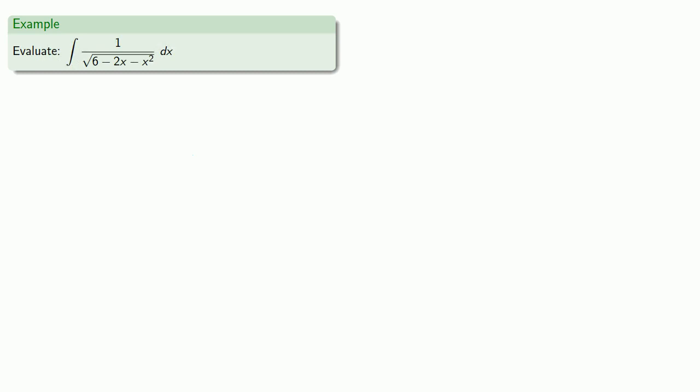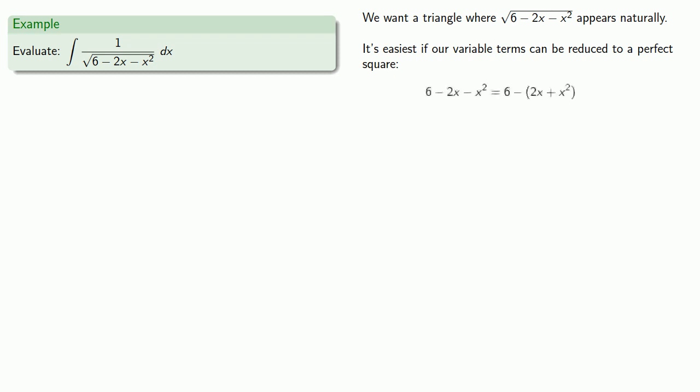Sometimes we have to do a little bit more work. Here we want to find the integral of 1 over square root 6 minus 2x minus x squared. Again, we're looking for a triangle where square root 6 minus 2x minus x squared appears naturally. Since our Pythagorean relationship is expressed in terms of squares, it's easiest if our variable terms can be reduced to a perfect square.